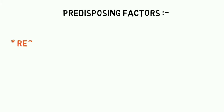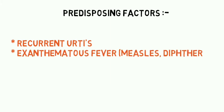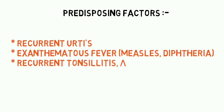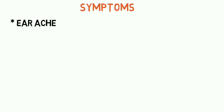What are the predisposing factors? Recurrent upper respiratory tract infections, exanthematous fever such as measles and diphtheria, recurrent tonsillitis and adenoiditis. Streptococcus pneumoniae and Haemophilus influenzae are some common bacteria causing ASOM.